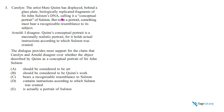Carolyn says: the artist Mark Quinn has displayed, behind a glass plate, biologically replicated fragments of Sir John Solstyn's DNA, calling it a conceptual portrait. So this artist, Mark Quinn, is essentially just displaying a fragment — something like a double helix strand — of Solstyn's DNA. And he calls it a conceptual portrait.